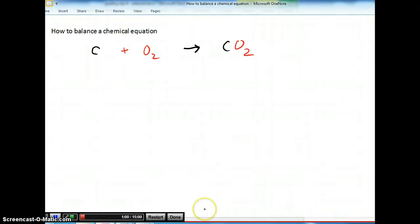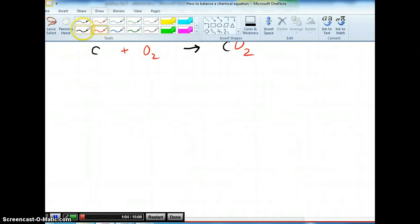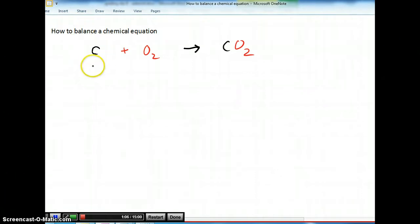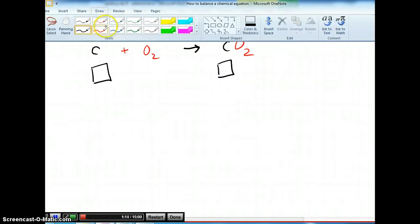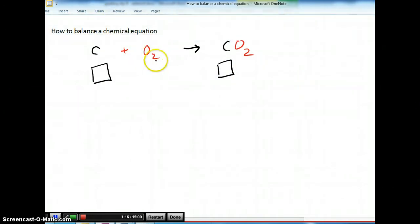All right, how to balance this equation? So let's see how many carbon do I have here. One carbon. So let's just say one box. Over here, one box. And how many oxygens do I have? Well, there's two oxygens. So let's just say two box. And over here, there's two box of oxygen as well.